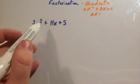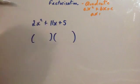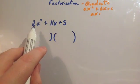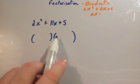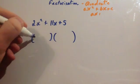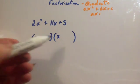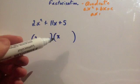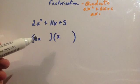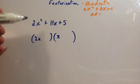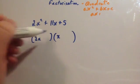We've been asked to factorize 2x squared plus 11x plus 5. Let's think of our brackets. We're going to have two things that times together to give you 2x squared. Remember whenever it's just x squared you had an x and an x? Well because it's 2x squared you're going to have a 2x and an x, because 2x times x is 2x squared.